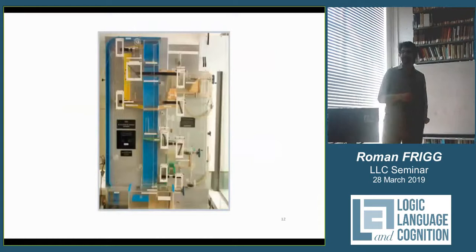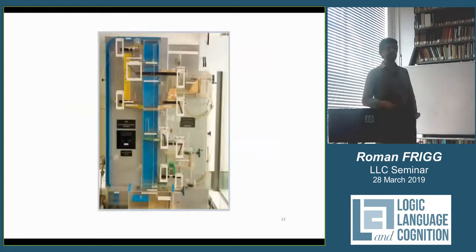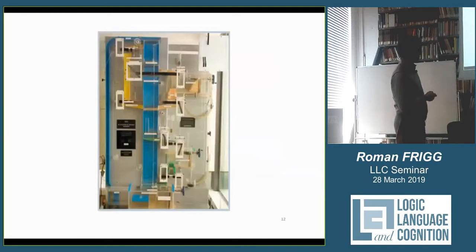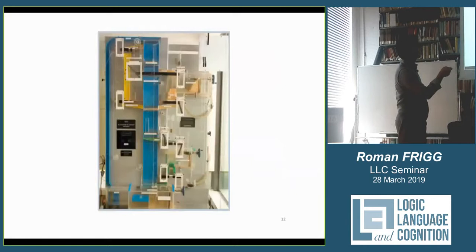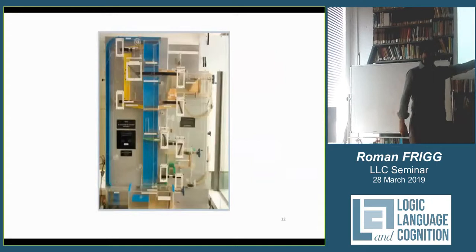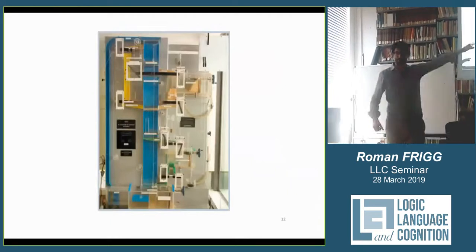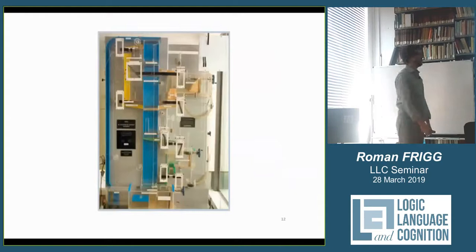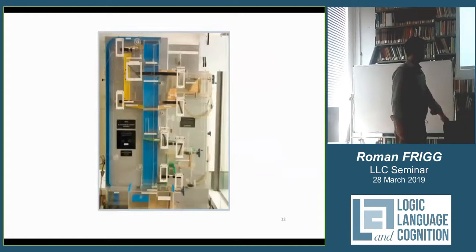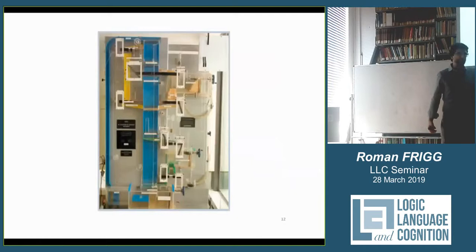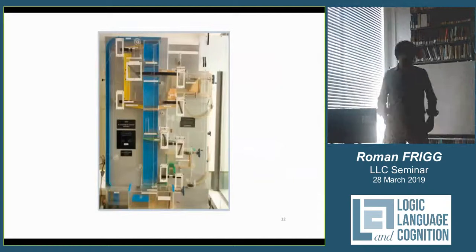Here's a scientific example. This is the Phillips-Newlin machine — a physical machine about two and a half meters high, a meter and a half wide. It has a water tank and a pump, with pipes through which water is pumped through various valves, reservoirs, and tanks. Per se, this is just a piece of elaborate plumbing. But this is a representation of an economy — it was built at the London School of Economics by Phillips and Newlin, and it basically represents a Keynesian economy. So the question is: how does this piece of plumbing become a representation of an economy?